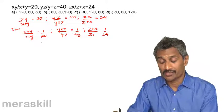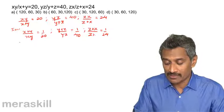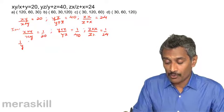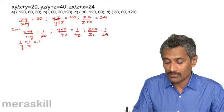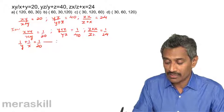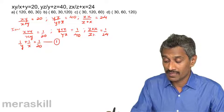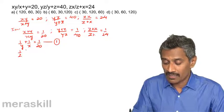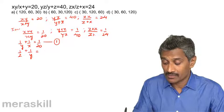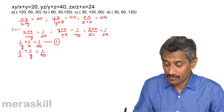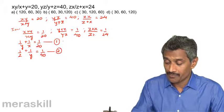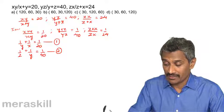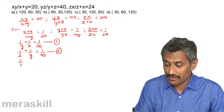So we get three equations. Further simplifying: (x+y)/xy = 1/y + 1/x = 1/20. Similarly, (y+z)/yz = 1/z + 1/y = 1/40. We can label these equations 1, 2, and 3.